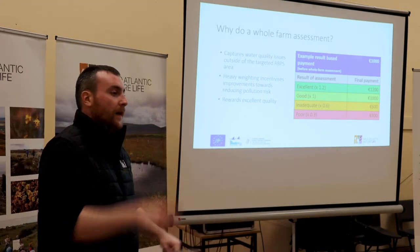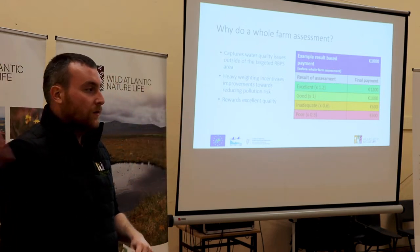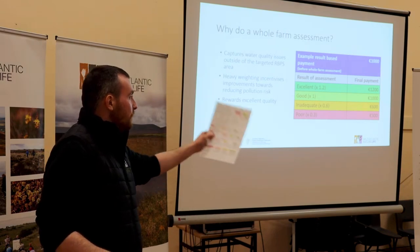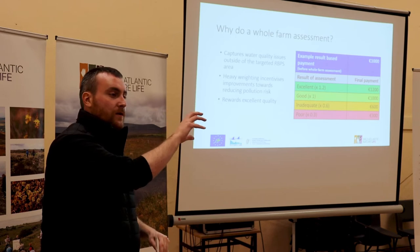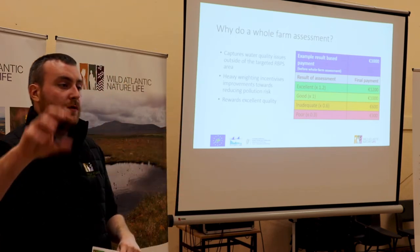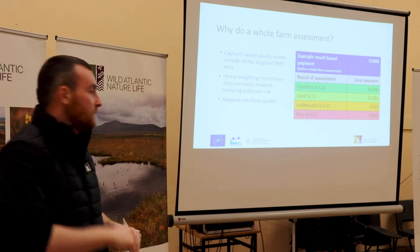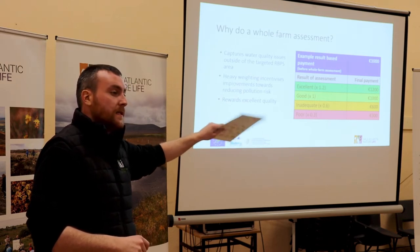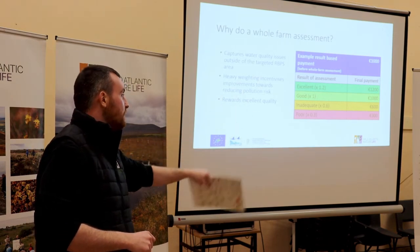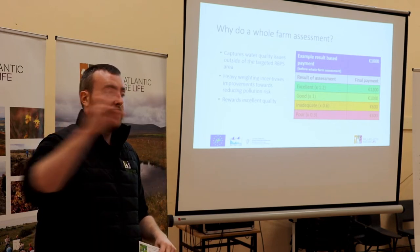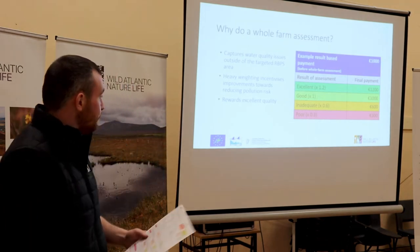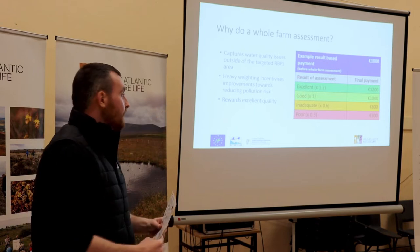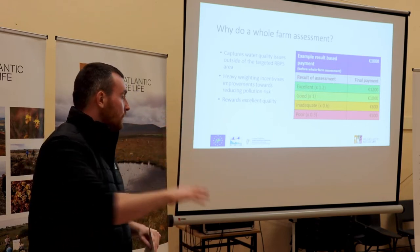If you were awarded good, that 1,000 euros multiplied by 1 gives you 1,000 euros. If we came along and identified some issues, that 1,000 euros multiplied by 0.6 is 600 euros - you've lost 400 euros. And if there were very significant issues, the poor multiplier of 0.3 means that 1,000 euros goes down to 300 euros.